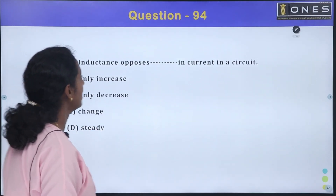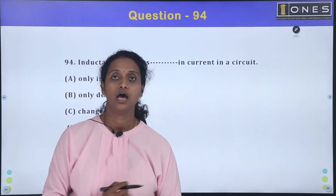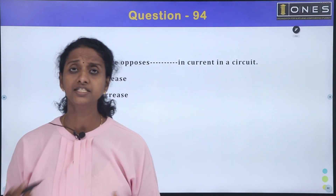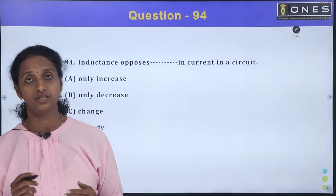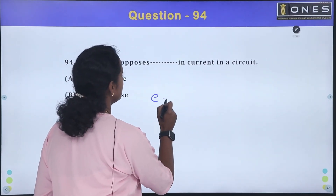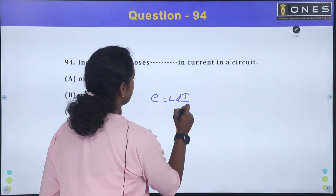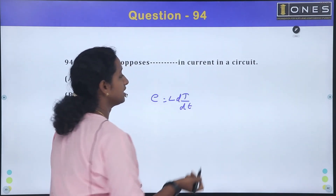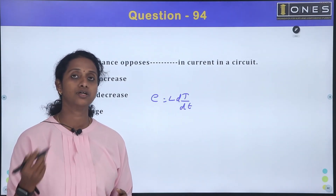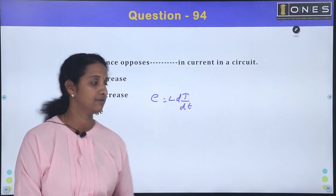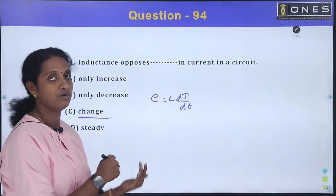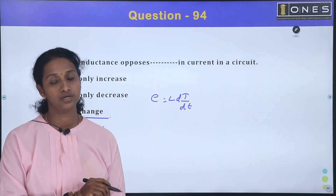Inductance opposes change in current. This is the key property of inductance — the induced voltage is L multiplied by dI/dt, meaning inductance resists any change in current flowing through the circuit.